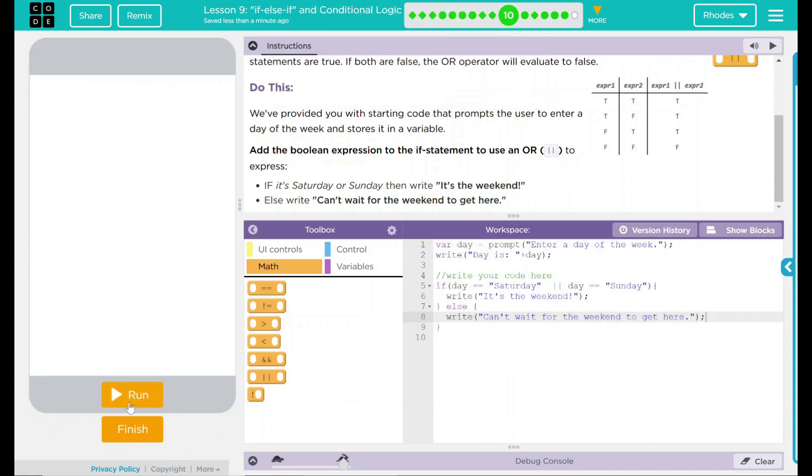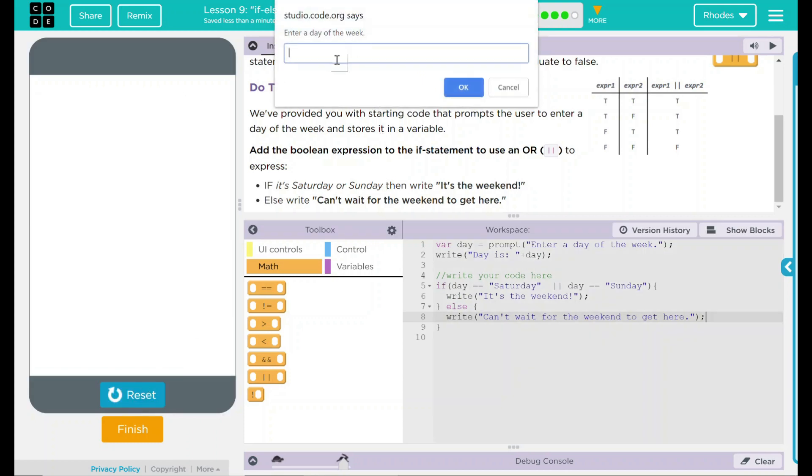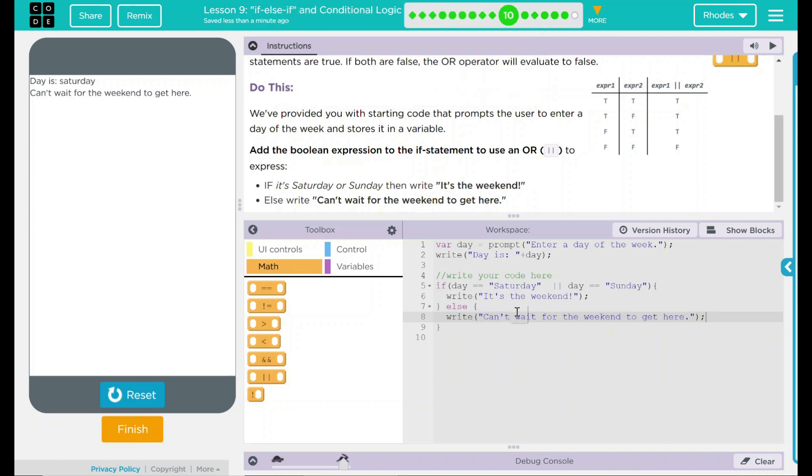Let's go back to these parentheses here. Instead of writing with a capital S, let's just write Saturday. If we hit OK, you can see it thinks it's something else because it has to be exactly like it is within the quotation marks. So be careful when you're writing out your code and you're getting the answer you want from the user.